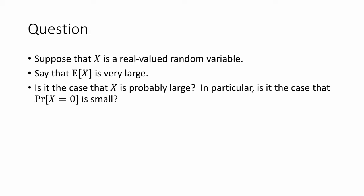To motivate the second-moment method, let's start with a question. Suppose that x is a real-valued random variable, and suppose that the expectation of x is really, really big. It might be intuitive that x is probably large, since its expectation is, but is this true? Is it the case that the probability that x is equal to 0 is small? Pause the video right now and think about it.